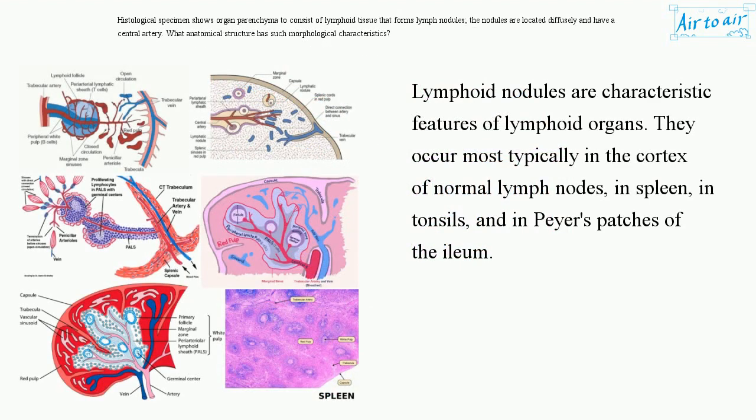Lymphoid nodules are characteristic features of lymphoid organs. They occur most typically in the cortex of normal lymph nodes, in the spleen, in tonsils, and in Peyer's patches of the ileum.